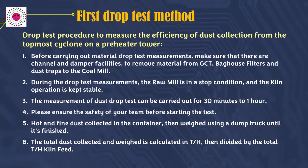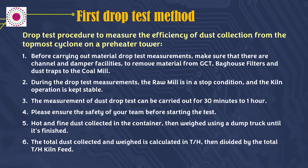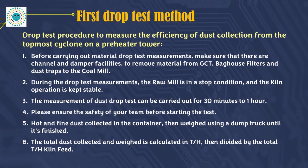First drop test method. Drop test procedure to measure the efficiency of dust collection from the topmost cyclone on a preheater tower. Before carrying out material drop test measurements, make sure that there are channel and damper facilities to remove material from GCT, bag house filters and dust traps to the coal mill. Each has a dust receptacle underneath to collect dust during drop test measurements.